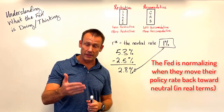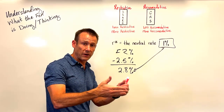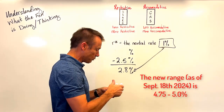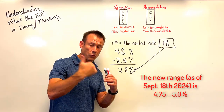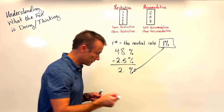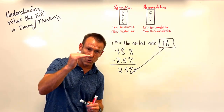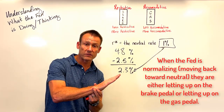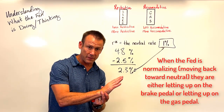Normalizing means getting the policy rate back to the neutral rate. They decided to make a cut, going with 50 basis points, bringing the range to 4.75 to 5.0% — I'll call it 4.8%. So they became less restrictive. When they lowered interest rates by 50 basis points, we're not going to say they're accommodative or stimulative — we say they're becoming less restrictive. Their foot is still on the brake pedal; they just let up on it.